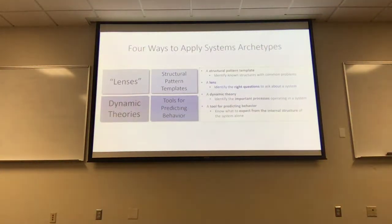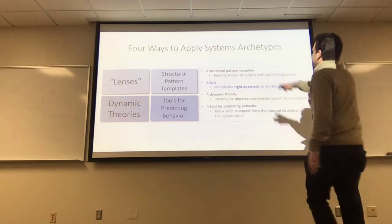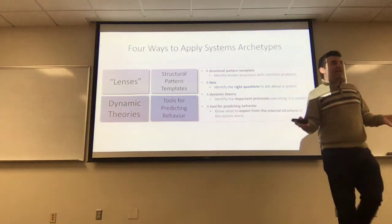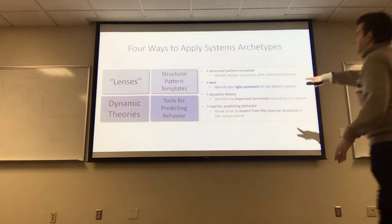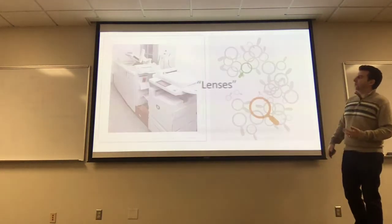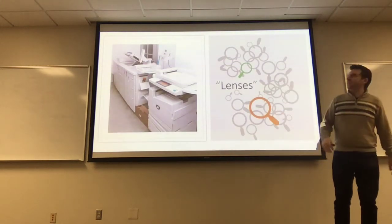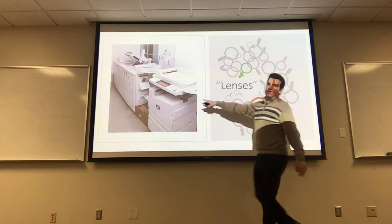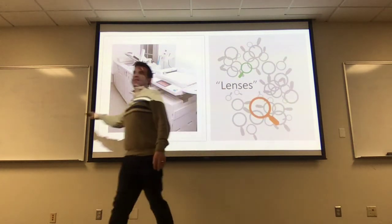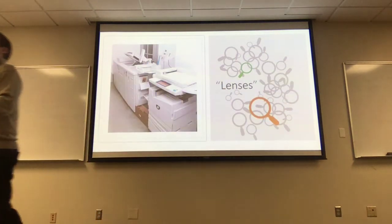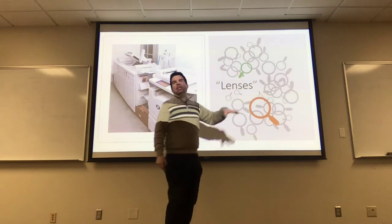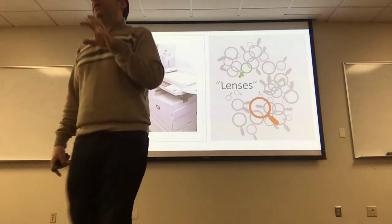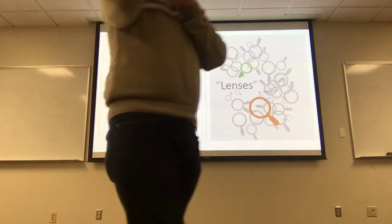So that's structural pattern templates — the base idea is to identify known structures. Now there's another way: viewing these structural patterns or archetypes as lenses. They help us identify the right questions to ask. If I think about the copy-center dilemma, there are a bunch of different ways I can model what is going on. Each one of these archetypes is like a different lens with a slightly different color filter, bringing out different parts of the picture.